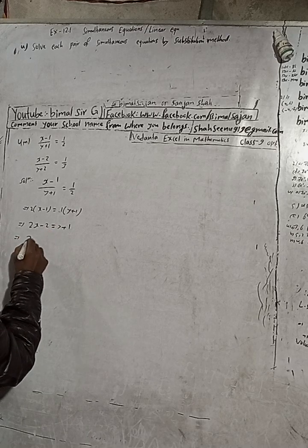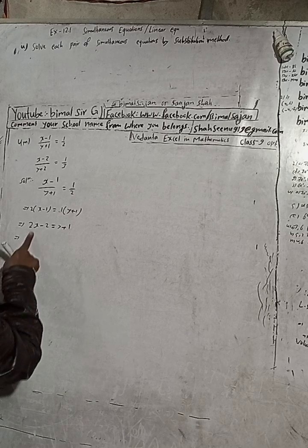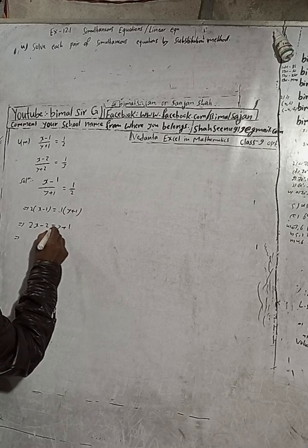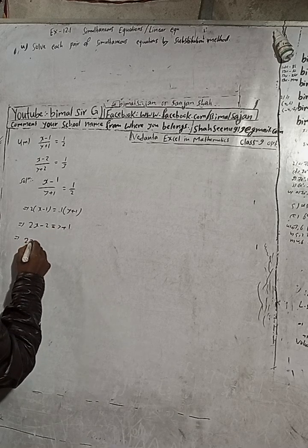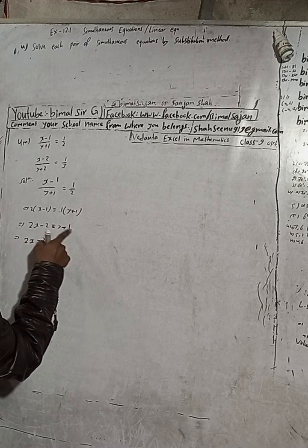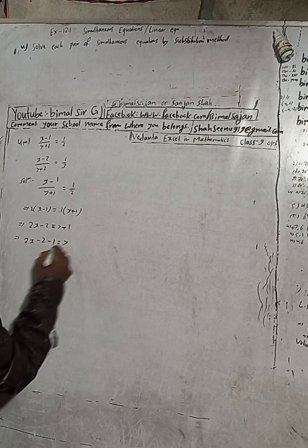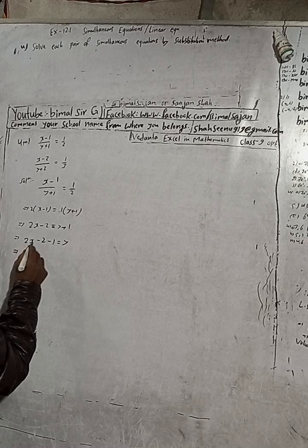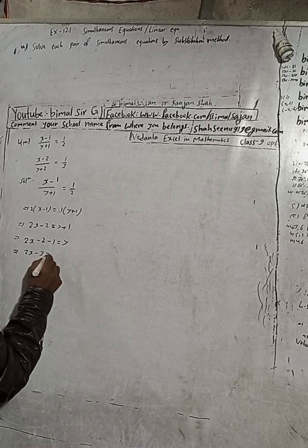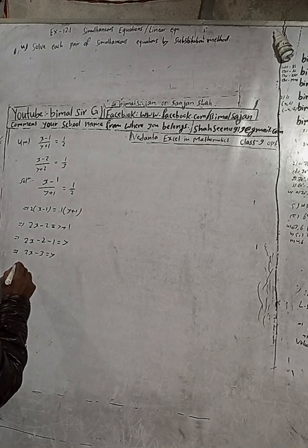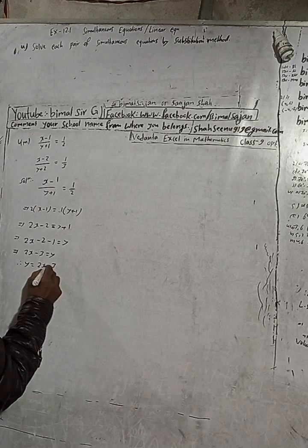From this side, I will take the value of y. So this is 2x minus 2, and minus 1 is equal to y. Therefore y is equal to 2x minus 3. This is our equation 1.